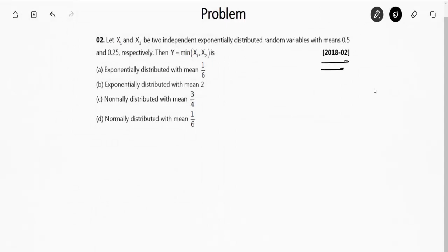Let X1 and X2 be two independent exponentially distributed random variables with means 0.5 and 0.25, respectively.